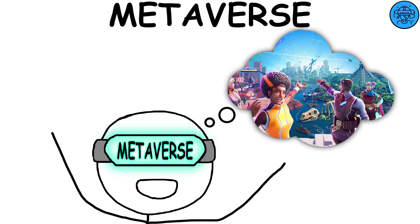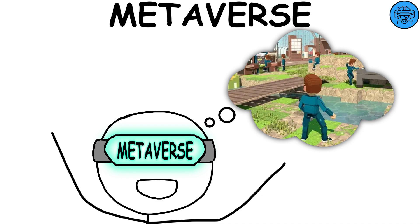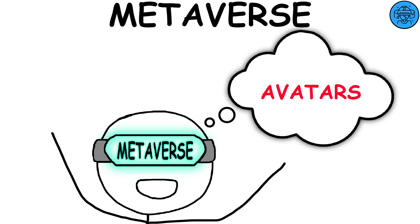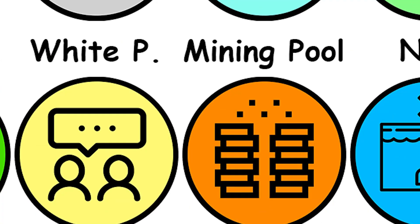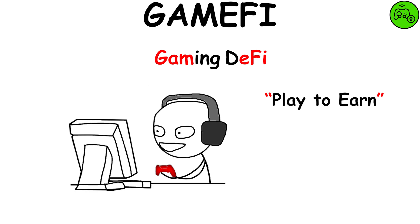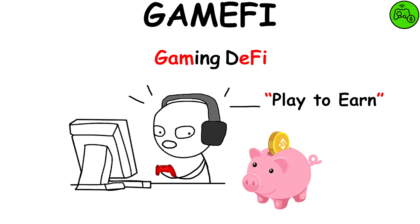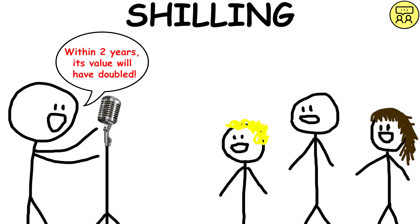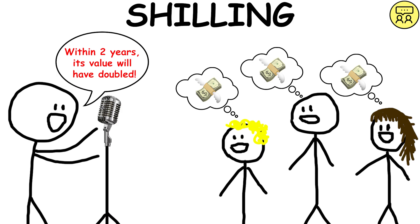Metaverse: a metaverse is a digital parallel reality where interactions occur through virtual representations chosen by users, known as avatars. GameFi: it is a trend in the gaming world where gaming and decentralized finance come together. The innovation of play-to-earn models allows players to earn rewards in the form of tokens or cryptocurrencies by connecting to gaming platforms. Shilling: a shill is when someone tries to promote a project through implicit advertising of a cryptocurrency.